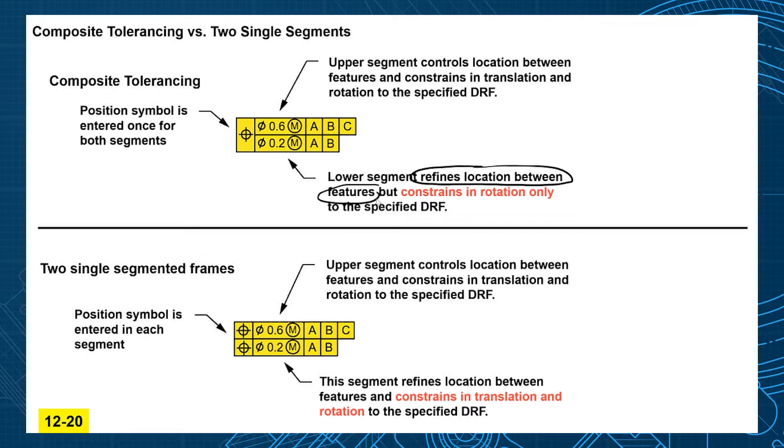Remember how your datum reference frame constrains your translations and rotations. Whenever you add datum features in a lower segment of composite, they're only going to constrain in rotation only, which means it controls only the parallelism, the perpendicularity relative to datums, not location anymore.